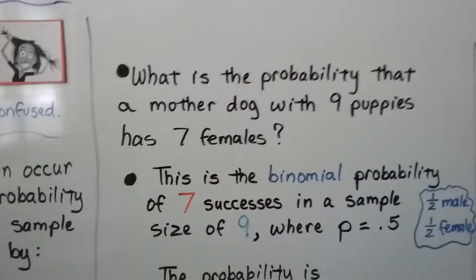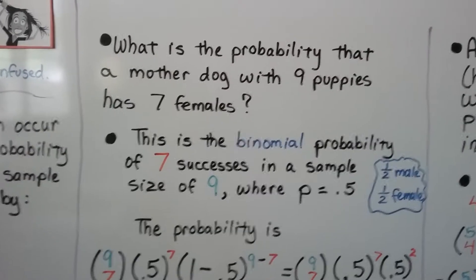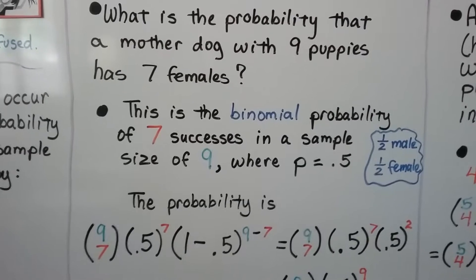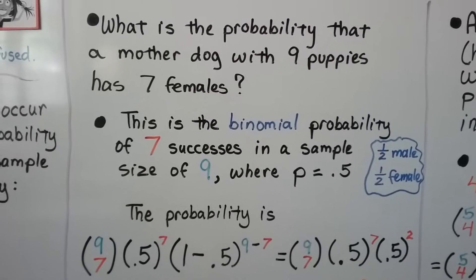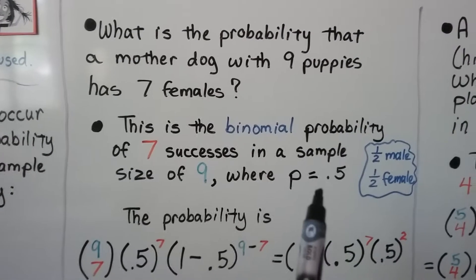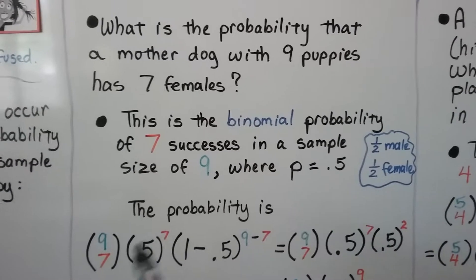So what's the probability that a mother dog with nine puppies has seven females? Well this is the binomial probability of seven successes in a sample size of nine where p equals 0.5. Because half could be male and half could be female. 0.5 is half.